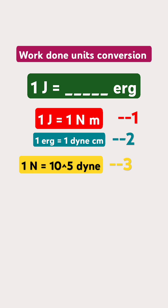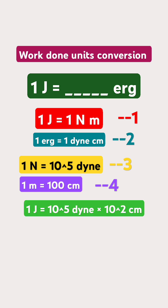While learning conversion of force units, we have learnt 1 newton is equal to 10 to the power of 5 dyne. Let us consider it as equation 3. 1 metre is equal to 100 centimetre. Let us consider it as equation 4.